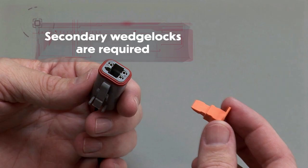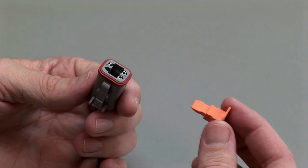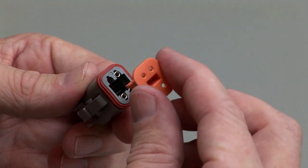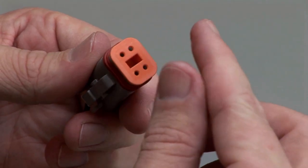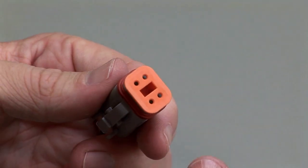To insert the wedge lock in the plug housing, select the appropriate wedge lock. Properly align with the opening in the connector interface. The open end of the socket should be slightly visible in the circular opening of the wedge lock. Apply downward pressure until a click is heard and felt.